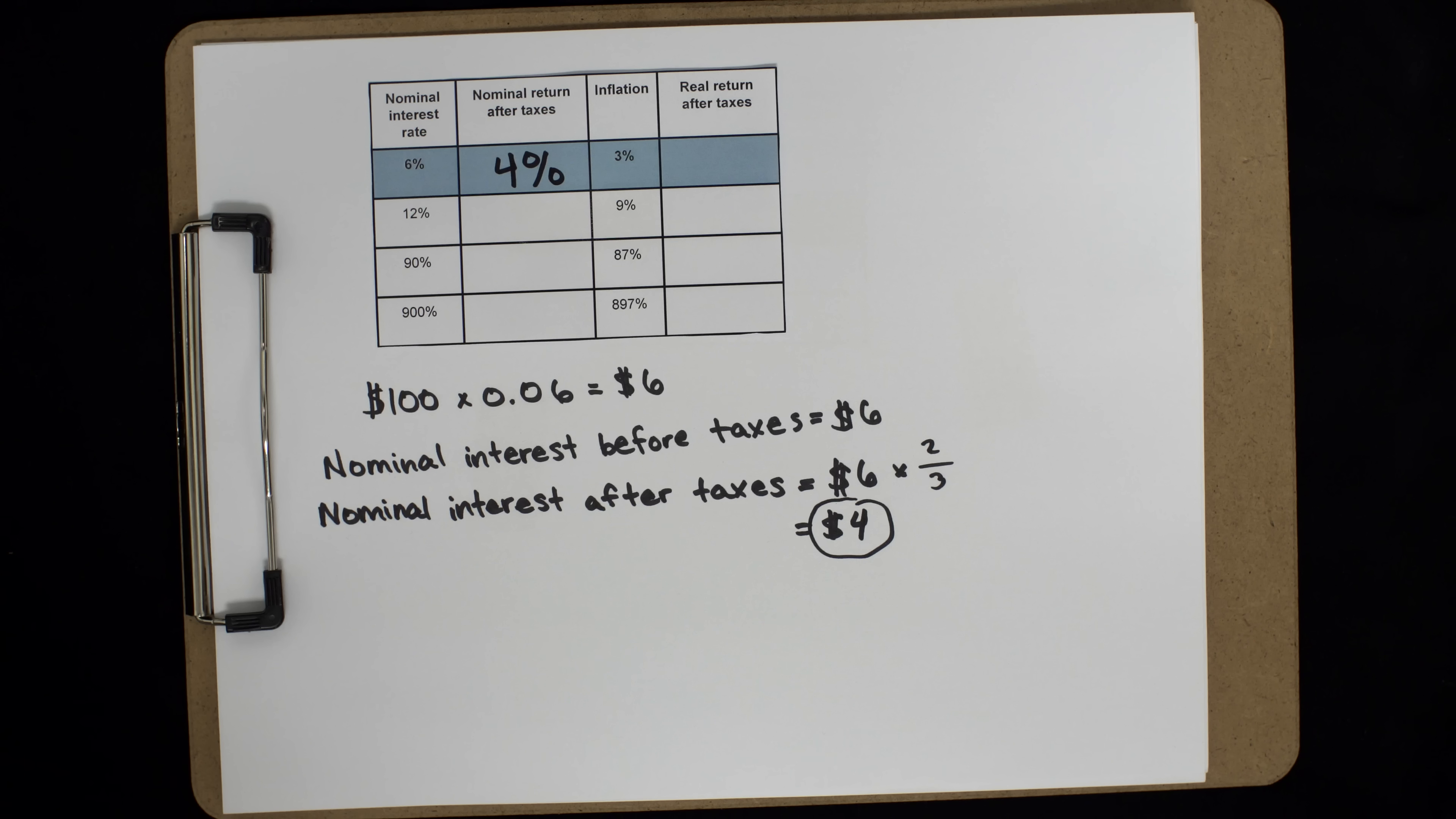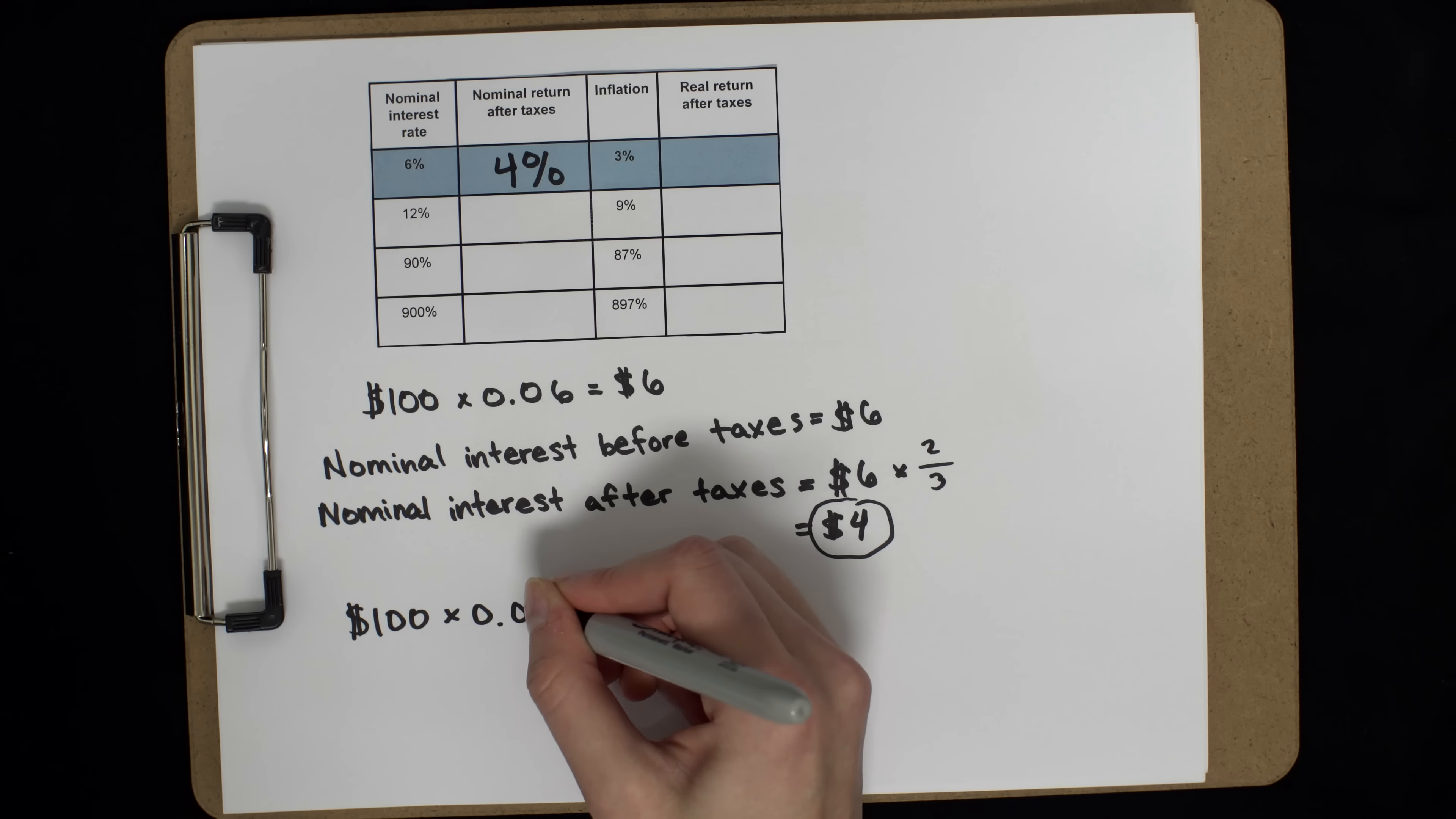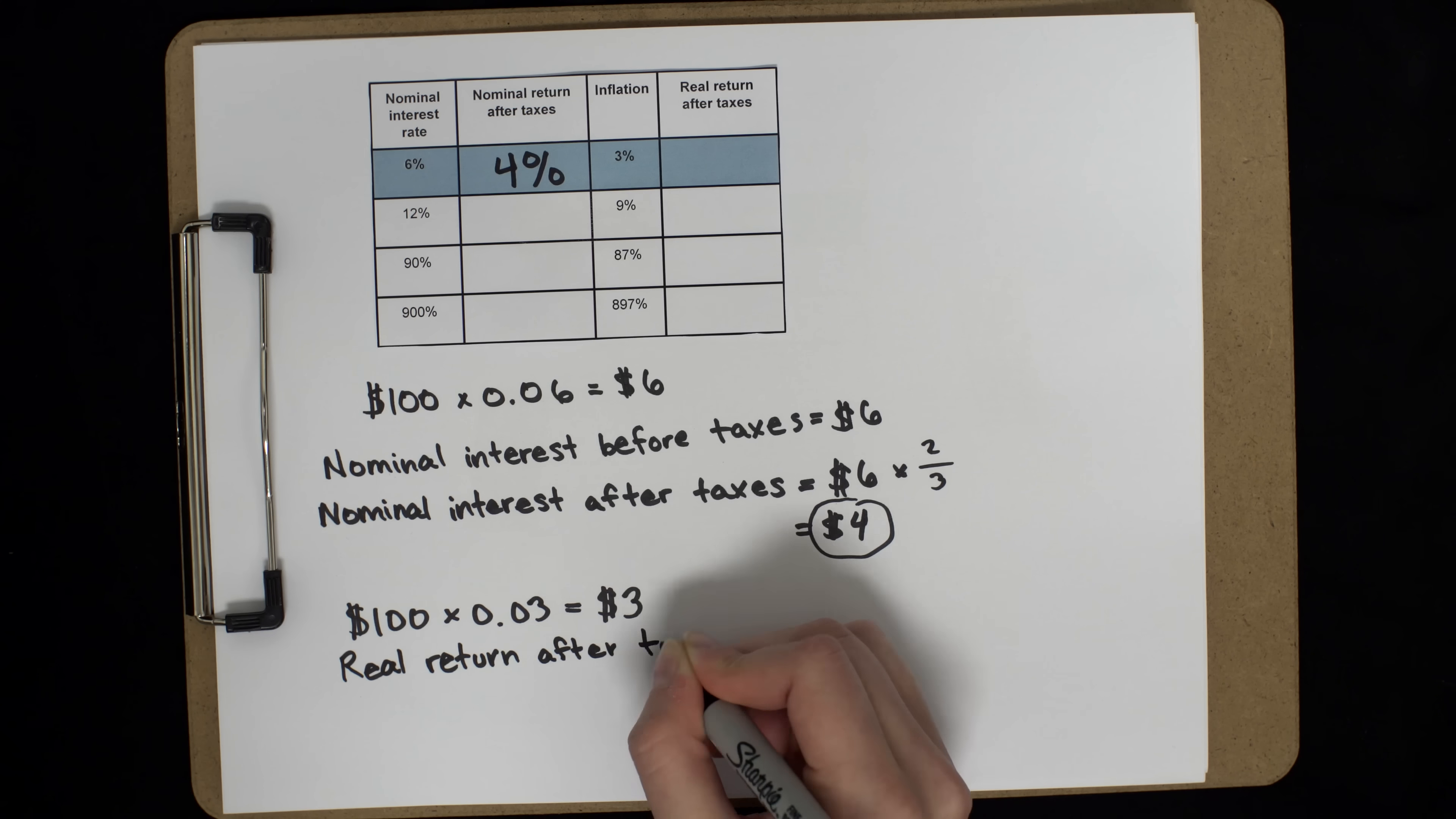Now, to calculate your real rate of return after taxes, the rate that actually matters, we have to adjust for inflation. Inflation is 3%. So after a year, your initial $100 would be equivalent to $103. So you gain $4 after taxes from interest,